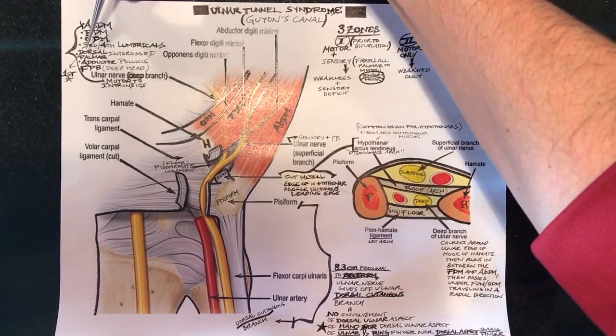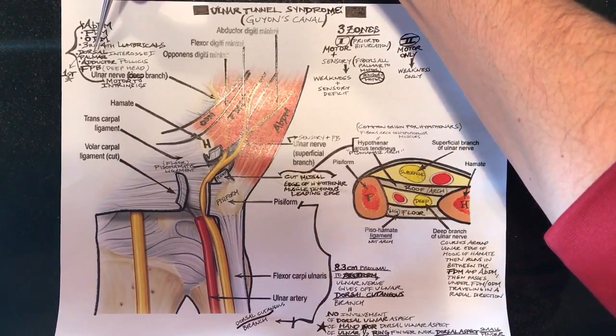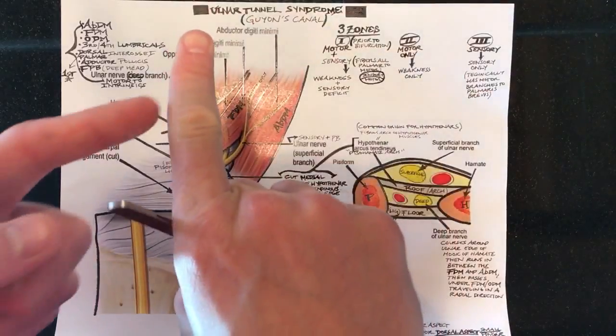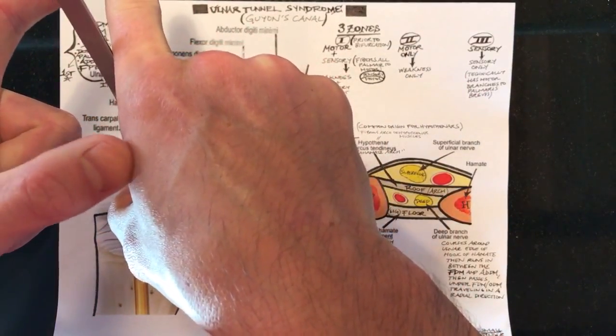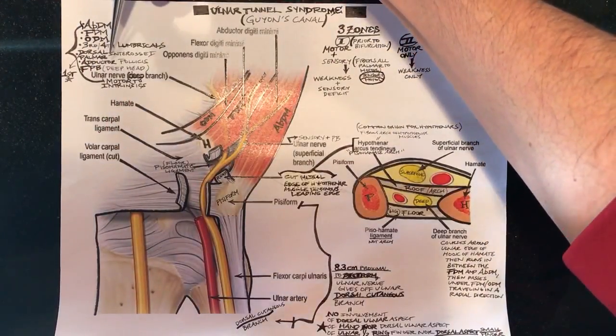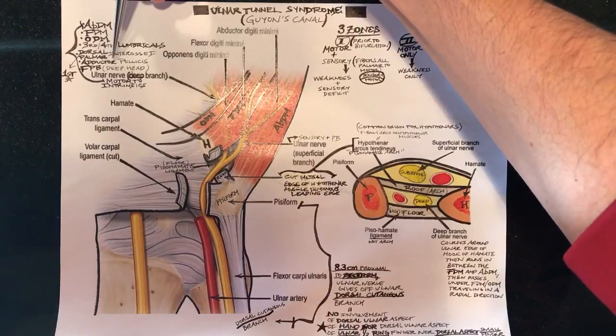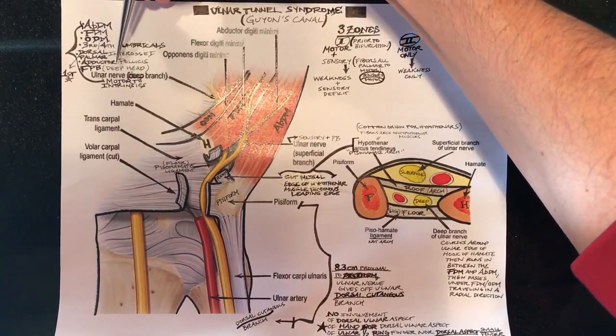And very important to note that the first dorsal interosseus is the most helpful muscle to test because you can easily isolate it by having them push against your finger and you can feel the muscle right there with my thumb. The adductor pollicis is also purely innervated by the deep branch of the ulnar nerve and the flexor pollicis brevis, and that's just the deep head.